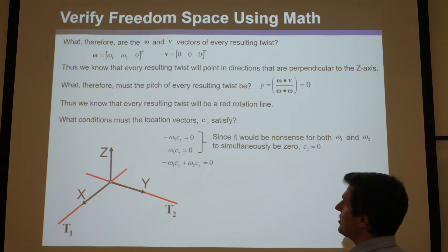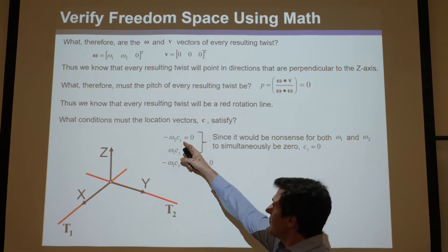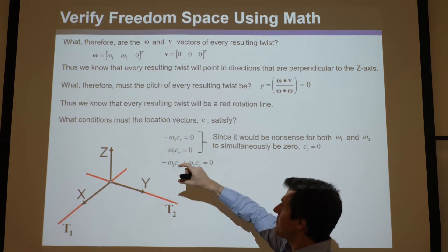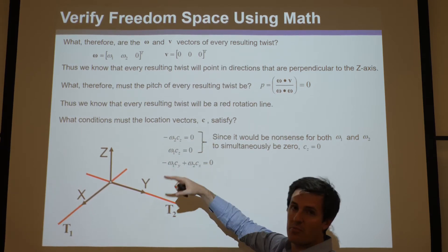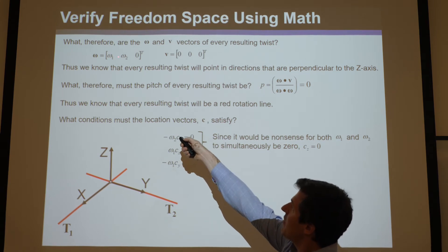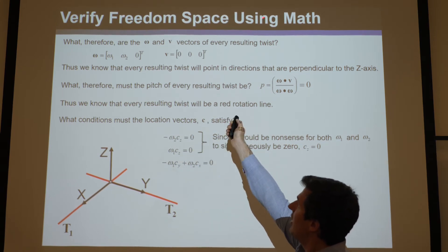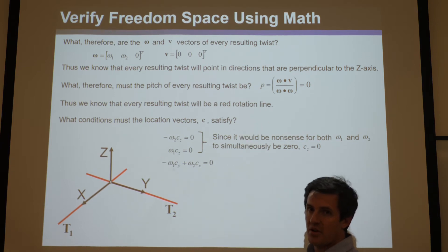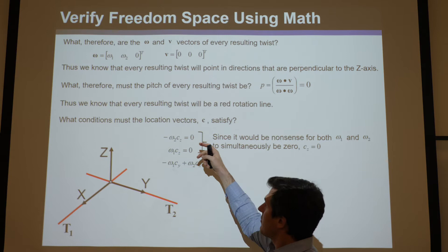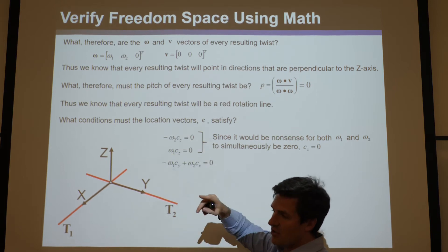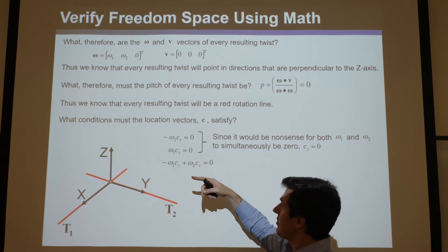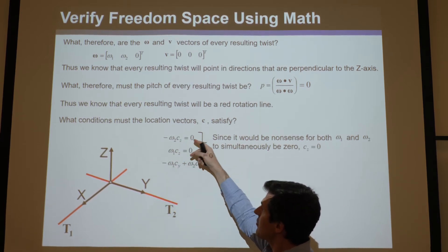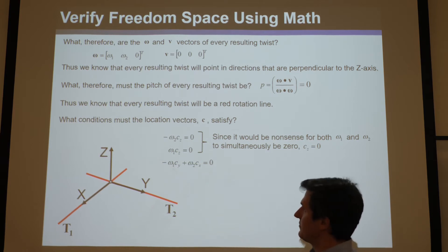So from these two equations, if omega 1 and omega 2 were both at the same time allowed to be 0, then Cz could be non-zero. But the fact is, if omega 1 and omega 2 were 0, then the whole twist vector would be nonsense. It wouldn't even be a twist vector. It would all be—all six components would be 0. So you know from logic that omega 1 and omega 2, at least one of them needs to not be 0. They're either both non-zero or one of them is not 0. And therefore, from these two equations to be true, Cz has to be 0.